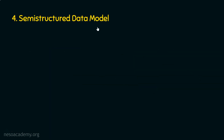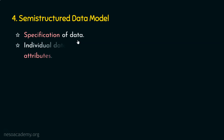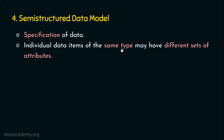Let's see the last data model, the semi-structured data model. The name itself says that this data model is semi-structured, meaning it deals with the specification of data where individual data items of the same type may have different sets of attributes. This data model is mainly used for transferring data among applications. If there are two different applications and data transfer needs to be done, using a semi-structured data model in the database makes transferring data among applications easier.